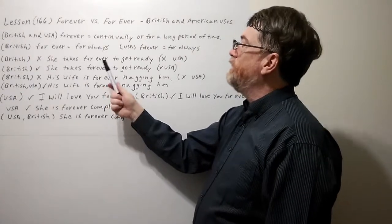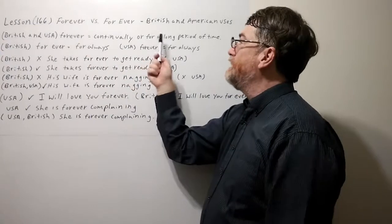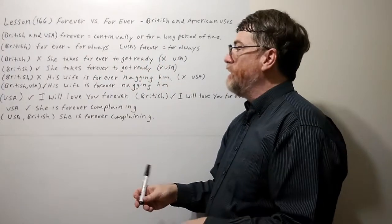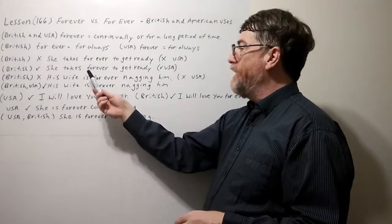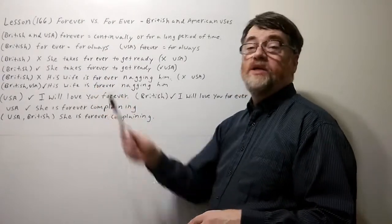What you do mean is forever with the one word meaning continually or for a long period of time. So in British English this first one would be wrong. And again, the correct way would be to say it as one word.